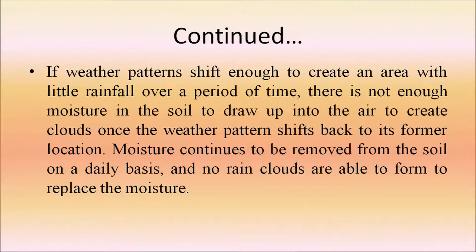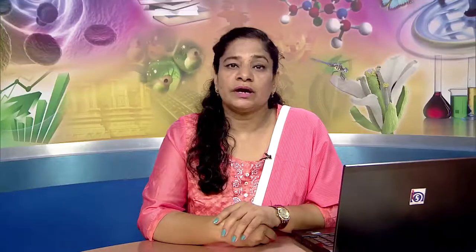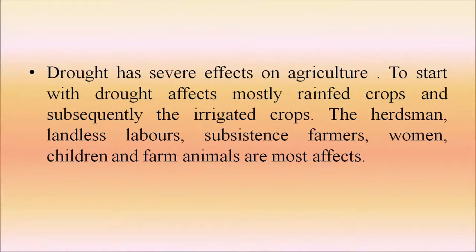Droughts have severe effects on agriculture. To start with, droughts affect mostly rain-fed crops and subsequently irrigated crops. Those most affected include herdsmen, landless laborers, subsistence farmers, women, children and farm animals.